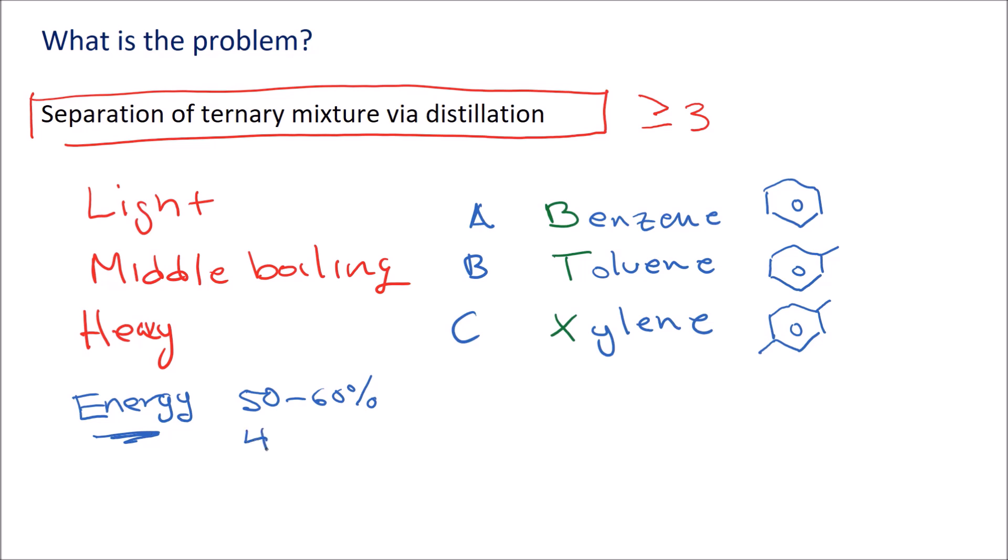If you cast a broader net and look at chemicals and refining, both industries together, it would still be quite large, maybe 40 to 60%. And if you look globally across all industries and all energy consumption globally on the planet, distillation is still responsible for about 3% of the total. So an incredibly important process.